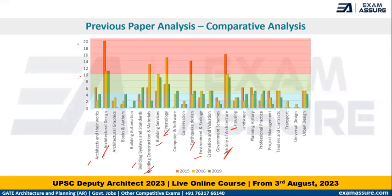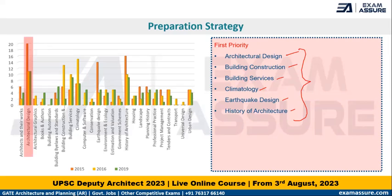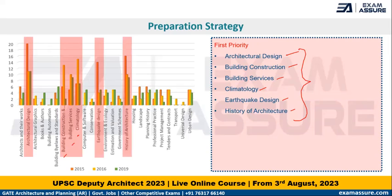Taking an overall analysis, we can say that the top priority subjects are Architectural Design, Building Construction, Building Services, Climatology, Earthquake Design, and History of Architecture. This is based on the analysis where the maximum number of questions come from these topics. In terms of preparation strategy, we can prioritize these as first priority — the highest priority — and then second and third priority.